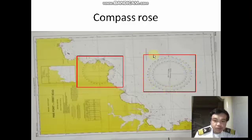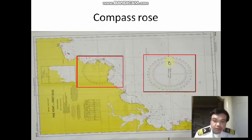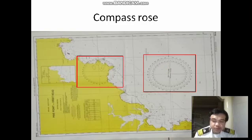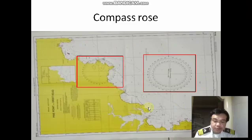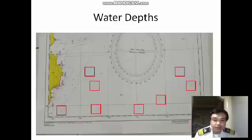We have the compass rose, which has two circles. The outside circle represents true direction and the inside circle represents magnetic direction. This magnetic reading is caused by variation — it reflects the variation effect for the locality, not the error of your own ship. That is what we call variation.